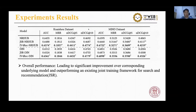Here are the main results. As we can see, our method leads to a significant improvement over corresponding underlying models and outperforms the existing joint training framework for search and recommendation. The results verify the effectiveness of the model-agnostic IW4-REC framework in improving any recommendation model.